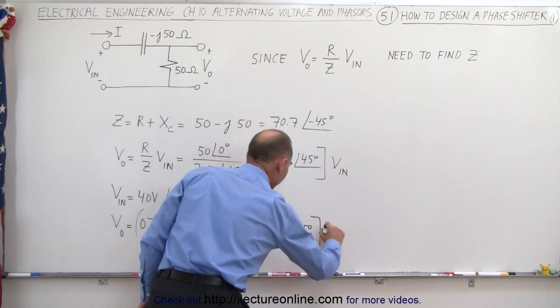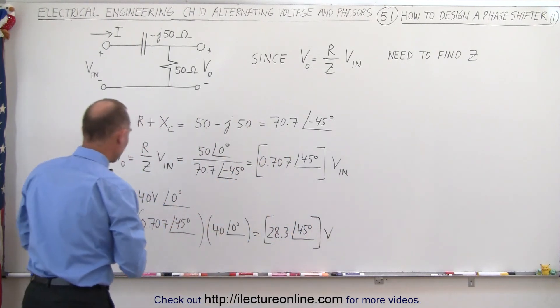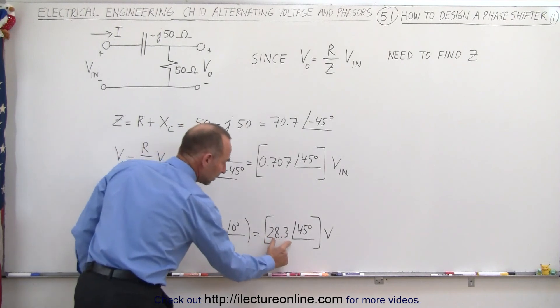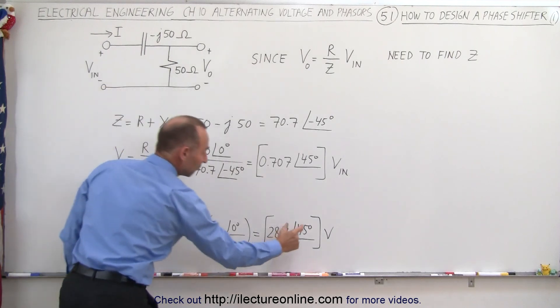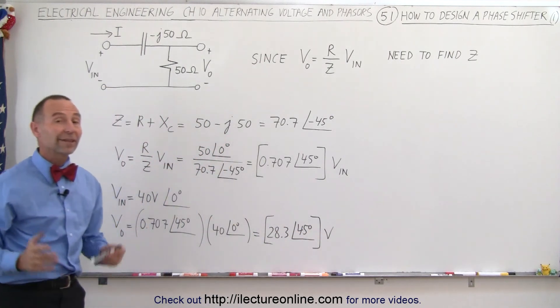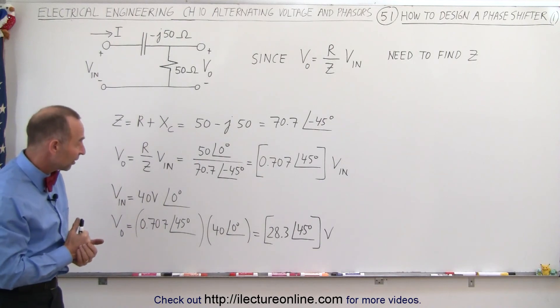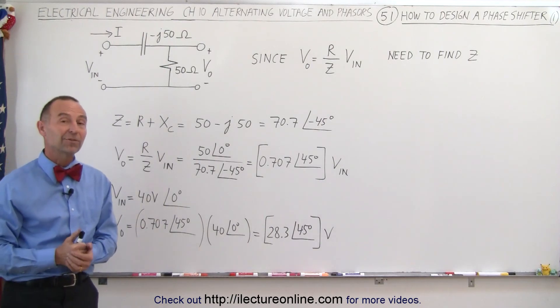So notice, we had an input voltage of 40 volts, an output of 28.3 volts, a phase shift of 0 degrees for the input voltage, and 45 degrees on the output voltage. That's why they call that a phase shifting circuit, and that's how it's done.